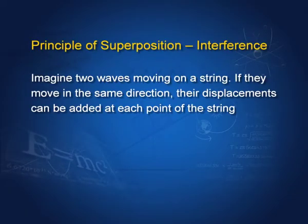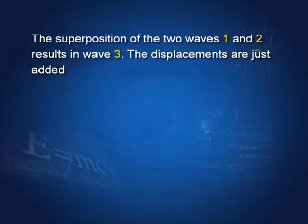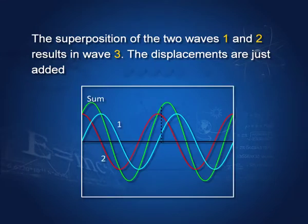Now, what happens if there are more than two waves? Suppose there are two waves moving on a string. If they move in the same direction, their displacements can be added at each point of the string. Otherwise, we take the difference of the displacements if they are moving in the opposite direction. This is called the principle of superposition — the displacements of the two waves moving in the same or opposite direction can be added or subtracted. Superposition of two waves gives a resultant wave whose amplitude can be obtained as the vector sum of the amplitudes of the individual waves. The interaction of waves in this manner is also called interference.